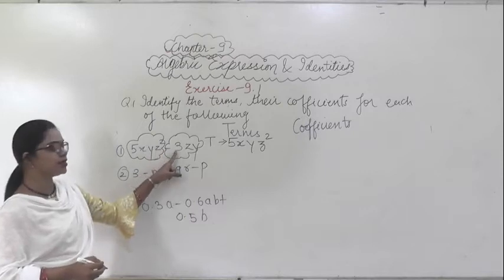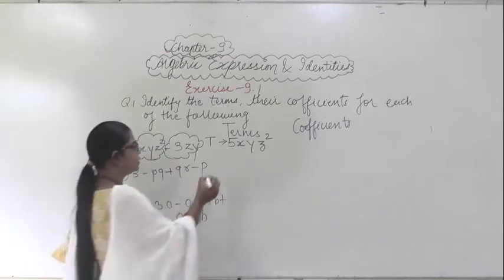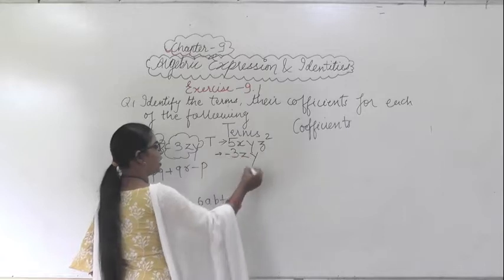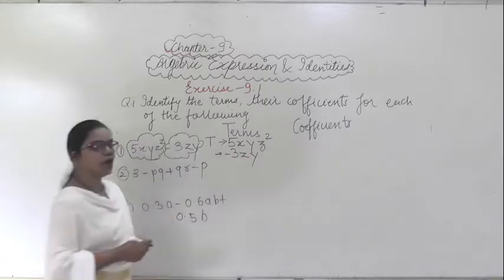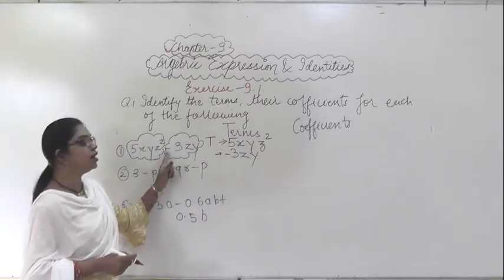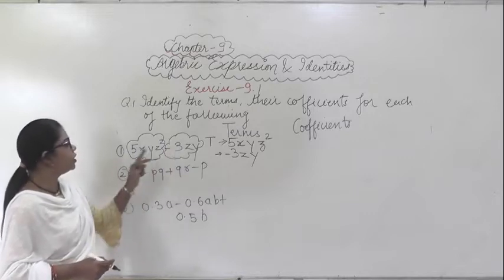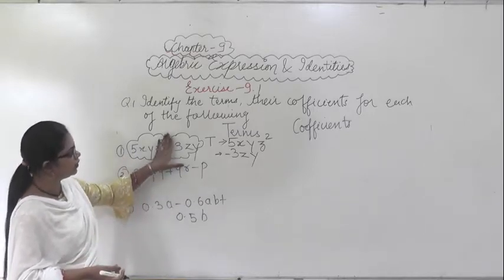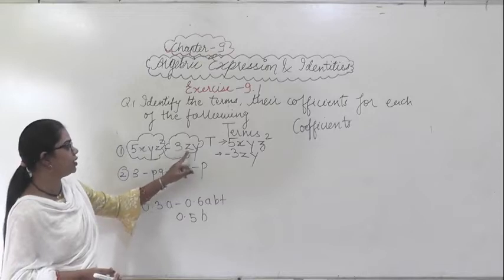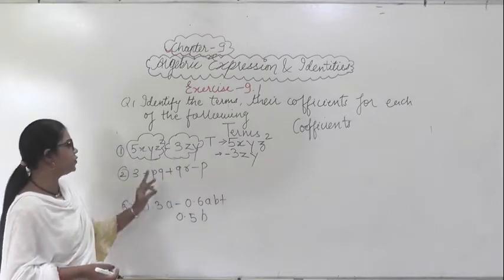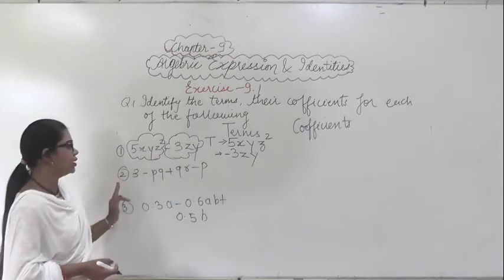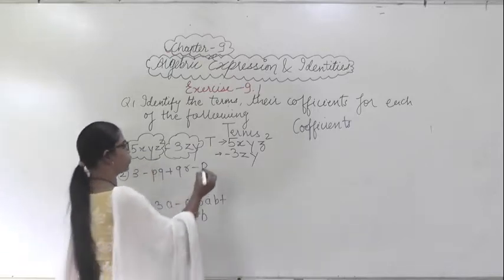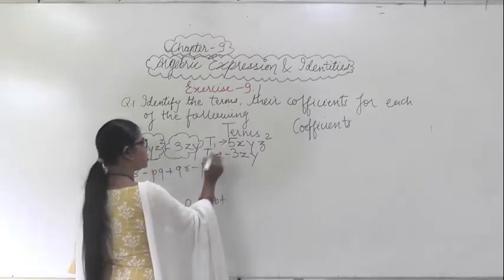And what is the next term? The next term is minus 3z⁵. You have to consider the sign. Many students will leave this sign and write down 3z⁵, but in terms we have to consider the sign. So this is term 1 and this is term 2.